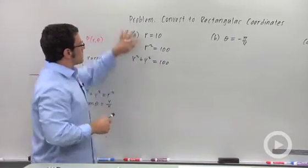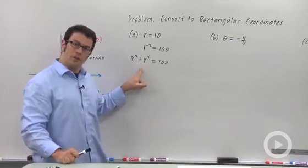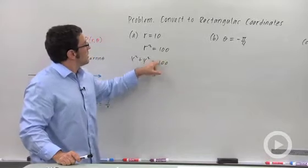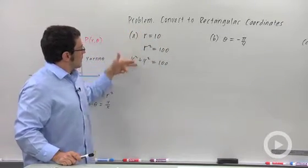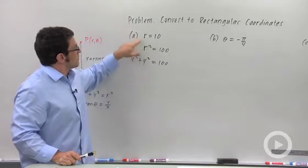And then I can see that r equals 10 is a circle centered at the origin, radius 10. It's much simpler in polar coordinates than in rectangular, but there it is. That's the rectangular version of this equation.